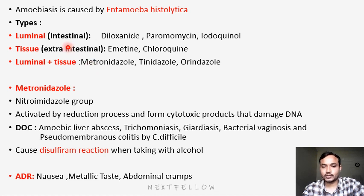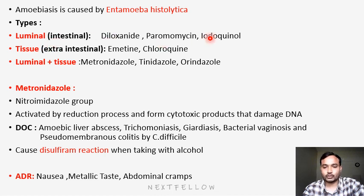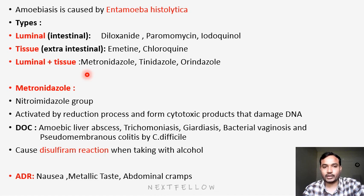There are different types of drugs beneficial in different types of amoebiasis. For luminal amoebiasis, the drugs are diloxanide, paromomycin, and hydroxyquinol. For tissue amoebiasis, emetine and chloroquine. For both luminal plus tissue combined amoebiasis, metronidazole, tinidazole, and ornidazole.